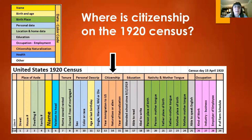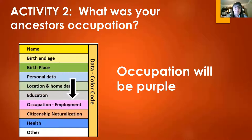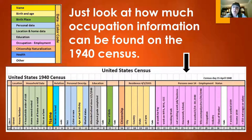In the 1920 census, you get the year of immigration to the United States, whether they're naturalized or alien, and what year they were naturalized. Activity two is to figure out what your ancestor's occupation was. Occupation information will be in purple. In the 1940 census, there are quite a few columns dealing with employment status: whether they work for pay, whether they're seeking work, how much they work, what their occupation is, the class of worker, the number of weeks worked, and their income.